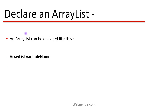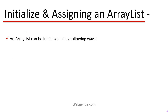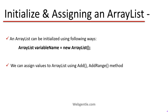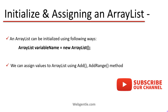Let's see how we can declare an ArrayList. Declaration is simple: first provide the type, which is ArrayList, then provide the variable name. Don't forget to include the System.Collections namespace. ArrayList can be initialized using the new keyword in the same line. We can assign values to ArrayList using the add() or addRange() methods — these are used to add new values. You can also assign values while initializing it.